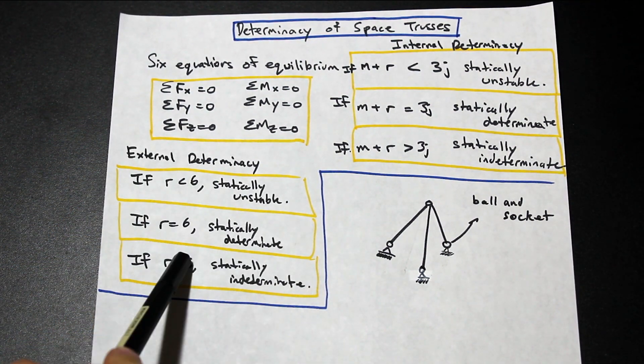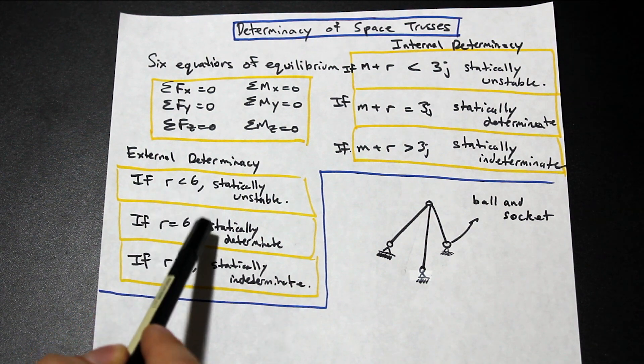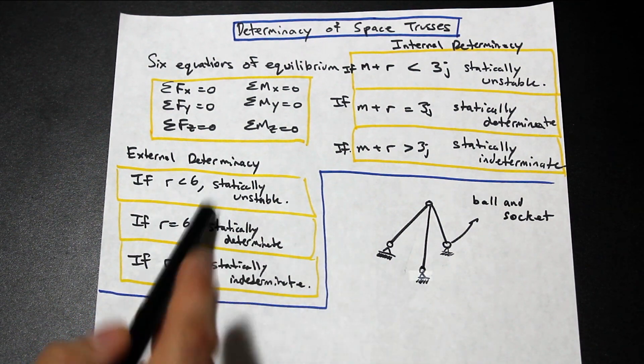In that case, it's statically unstable externally. And so let's just, you just take a look at this table here, and if your reactions are six, less than six, or greater than six, you just label it as such.